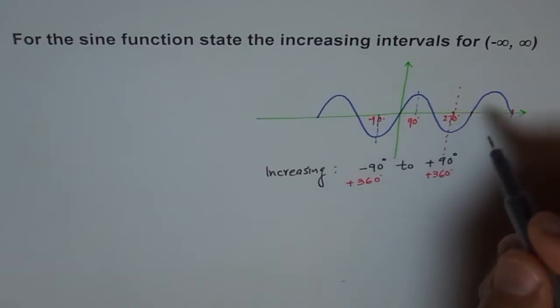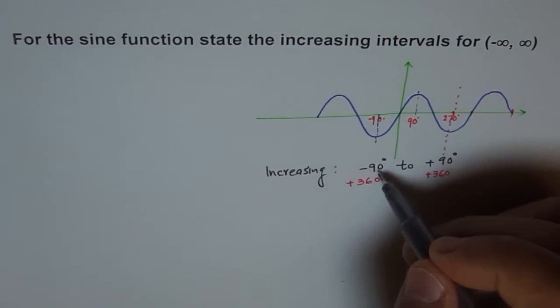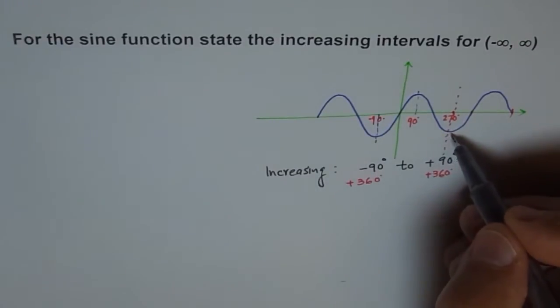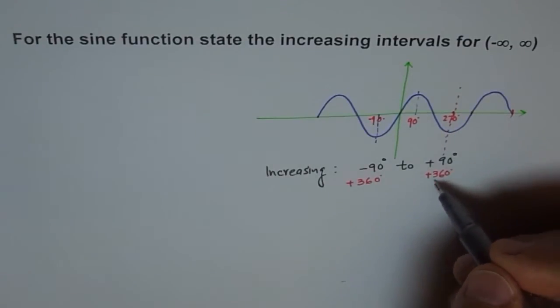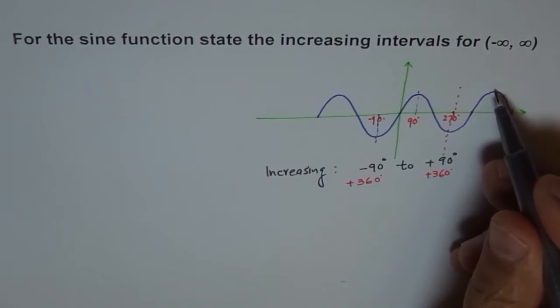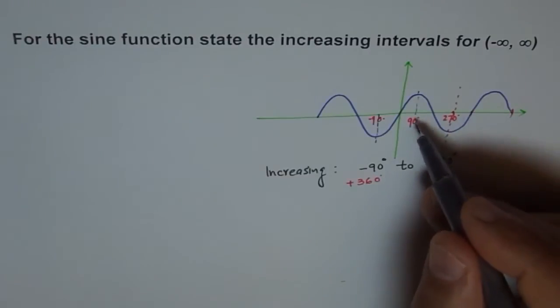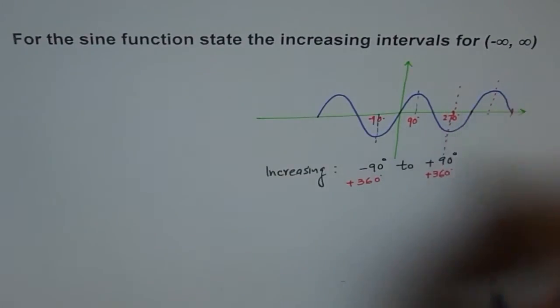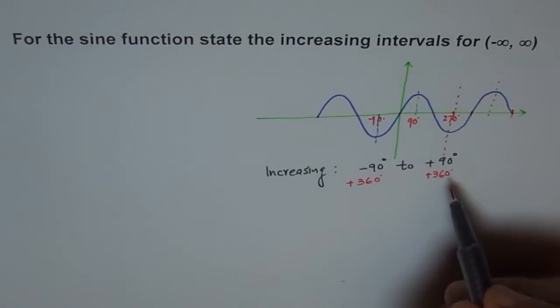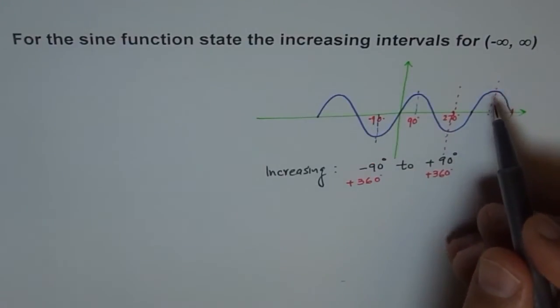So the next one is minus 90 plus 360 is 270, which you can see here. And then it will be 90 plus 360, like 450 degrees, that will be here, which is 360 plus 90. So after every 360, we'll have this increasing interval. And even plus or minus.